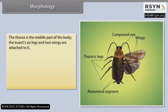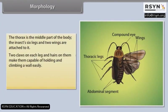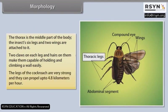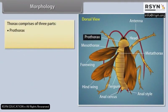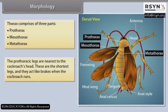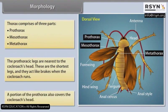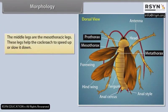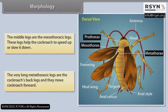The thorax is the middle part of the body; the insect's six legs and two wings are attached to it. Two claws on each leg and hairs make them capable of holding and climbing a wall easily. The legs can propel up to 4.8 kilometres per hour. The thorax comprises three parts: prothorax, mesothorax and metathorax. The prothorax legs are nearest to the head, are the shortest, and act like brakes when running. The mesothorax legs help the cockroach speed up or slow down. The very long metathorax legs are the back legs and move the cockroach forward.